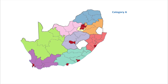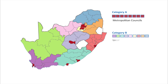Category A – Metropolitan councils. Category B – Local councils. Category C – District councils. District councils have executive and legislative powers in areas that include local municipalities.